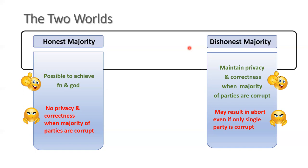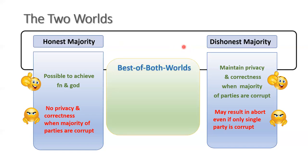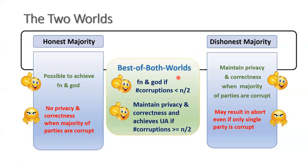So ideally you would want a single protocol that is compatible with both settings of honest and dishonest majority. This is exactly what best of both worlds MPC offers. It is a single protocol that achieves fairness or guaranteed output delivery when the number of corruptions happens to be less than N/2, and that very same protocol also maintains privacy, correctness, and achieves the best possible guarantee of unanimous abort if the number of corruptions is greater than or equal to N/2.